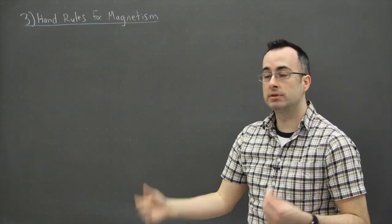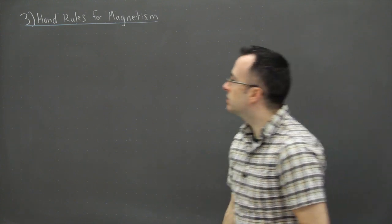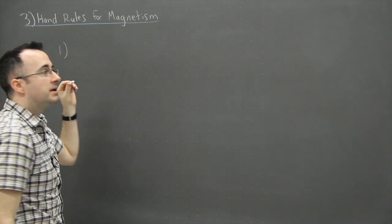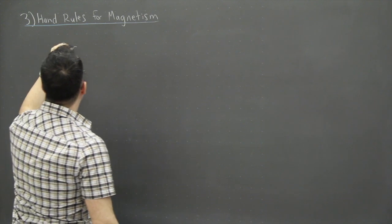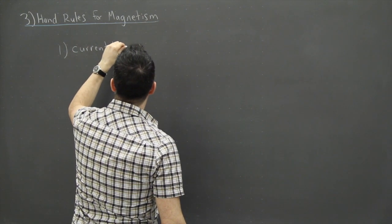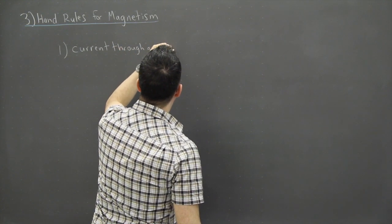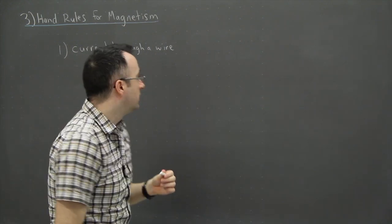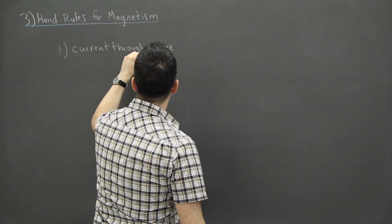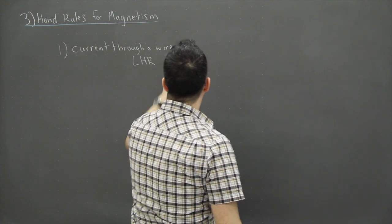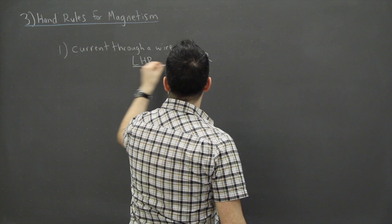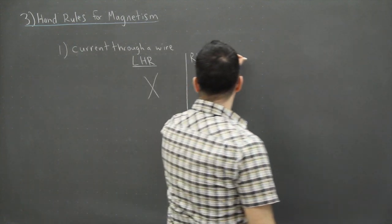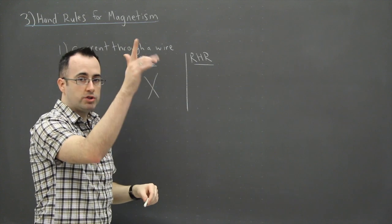A lot of people call these hand rules. Hand rule number one is going to be for current through a wire. The key here is that we might have a left hand rule or a right hand rule, but there is no left hand rule for this one. The reason is because we use conventional current, and because of that we only use our right hand rule.